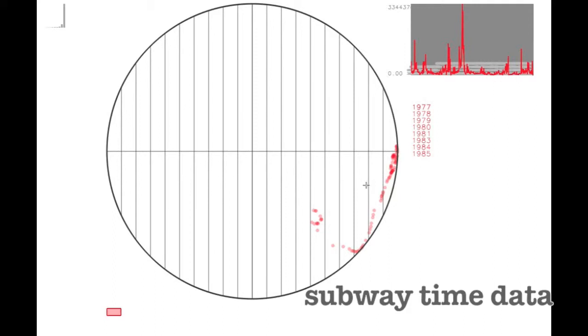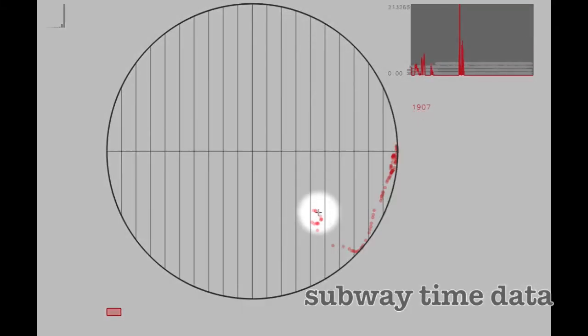It is also quite clear in this dataset that we have two distinct clusters. One for the early developing years of the subway system, and also of the more recent developed years.